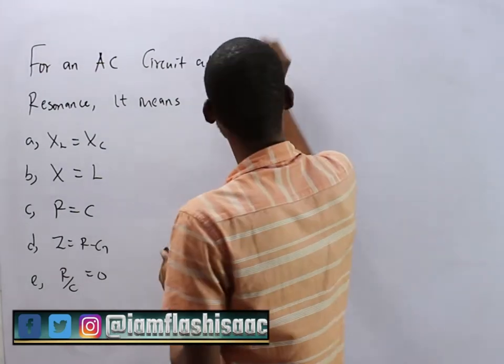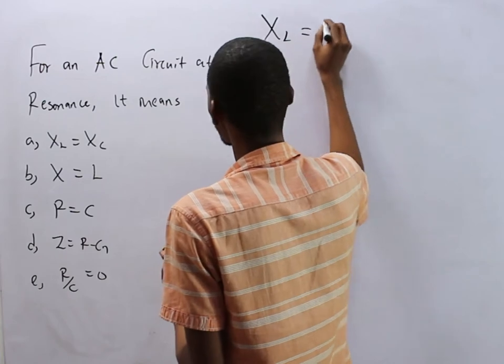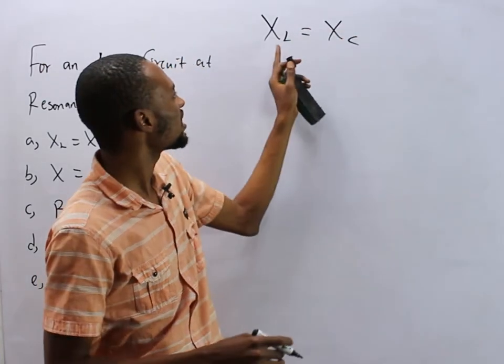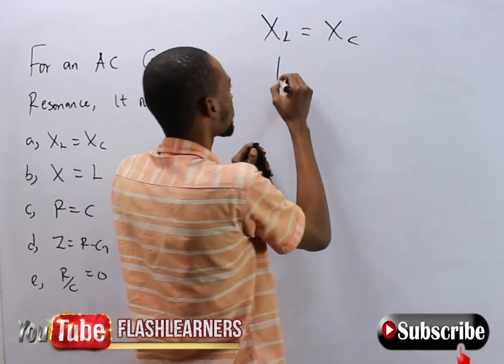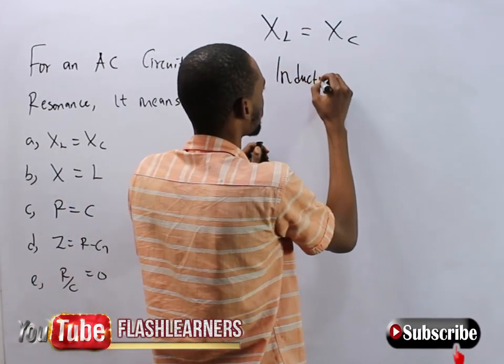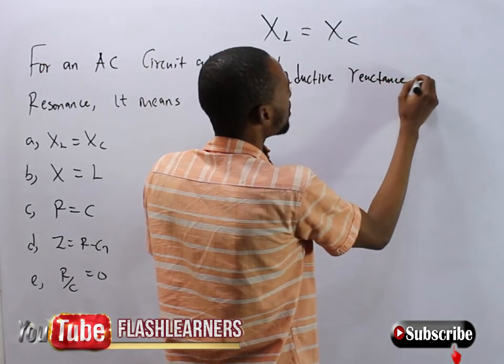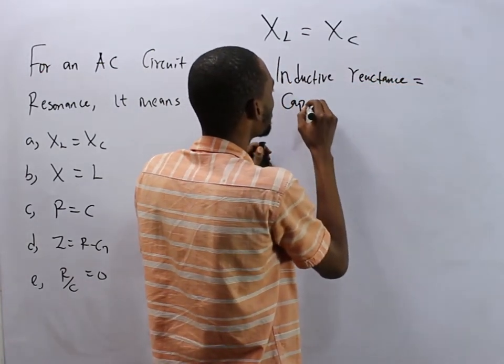For an AC circuit to be at resonance, it means that XL equals XC. This means that the inductive reactance is equals capacitive reactance.